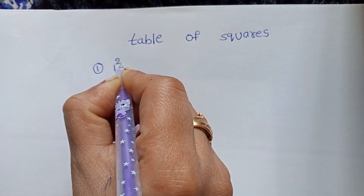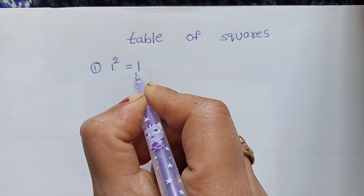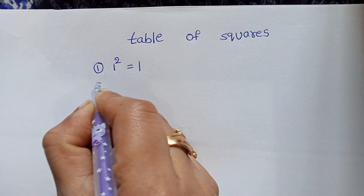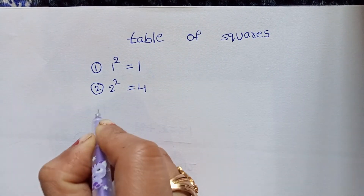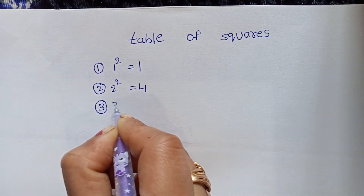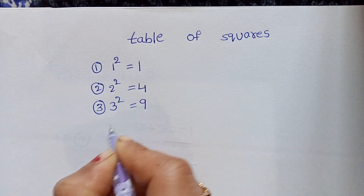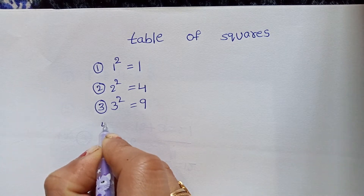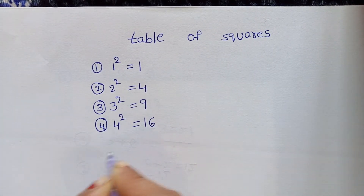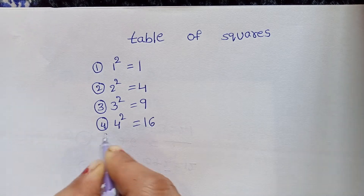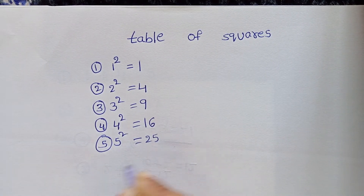One square equals to one. Two square equals to four. Three square equals to nine. Four square equals to sixteen. Five square equals to twenty-five.